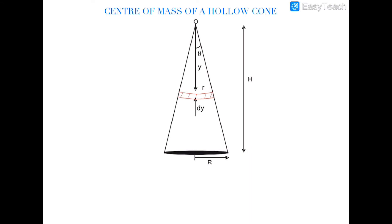In this video we will find out the center of mass of a hollow cone. This is a hollow cone where the half apex angle is theta, this length is h, and the element I will consider on the hollow cone will be a ring whose vertical width is dy and slant width will be dy sec theta.